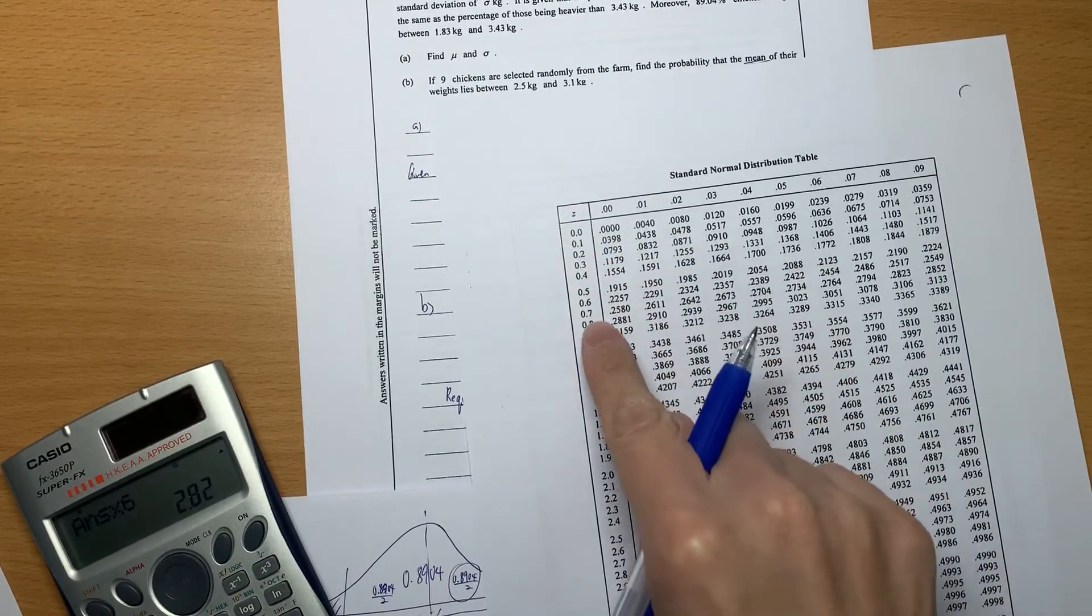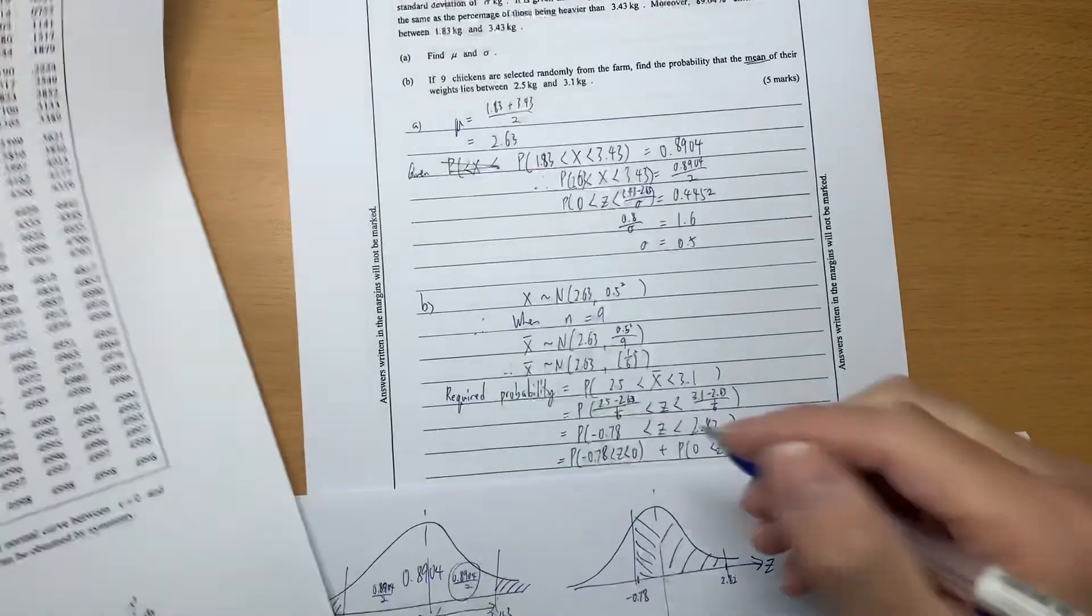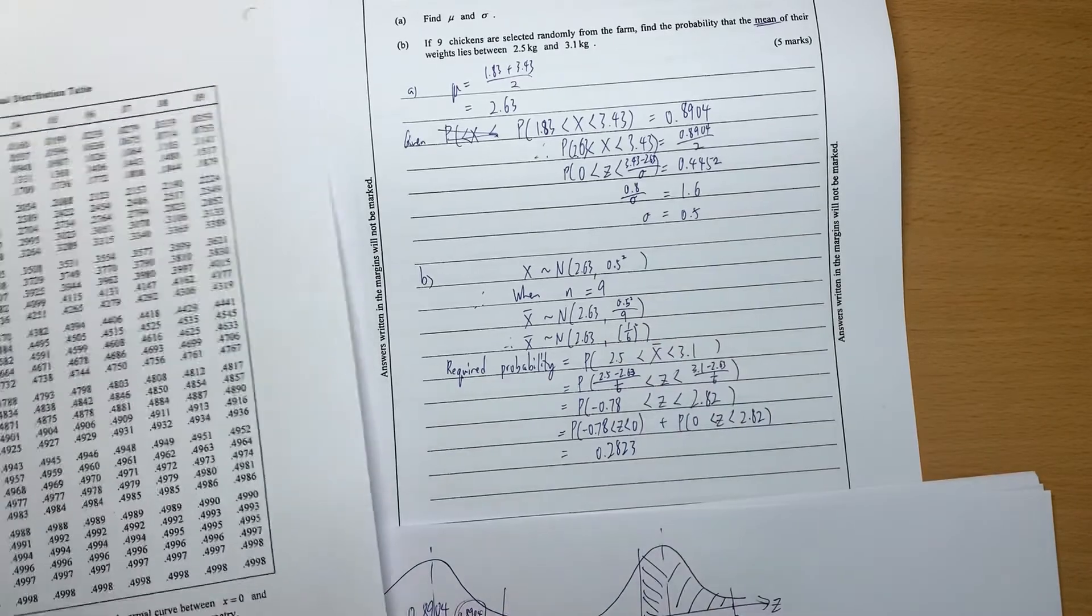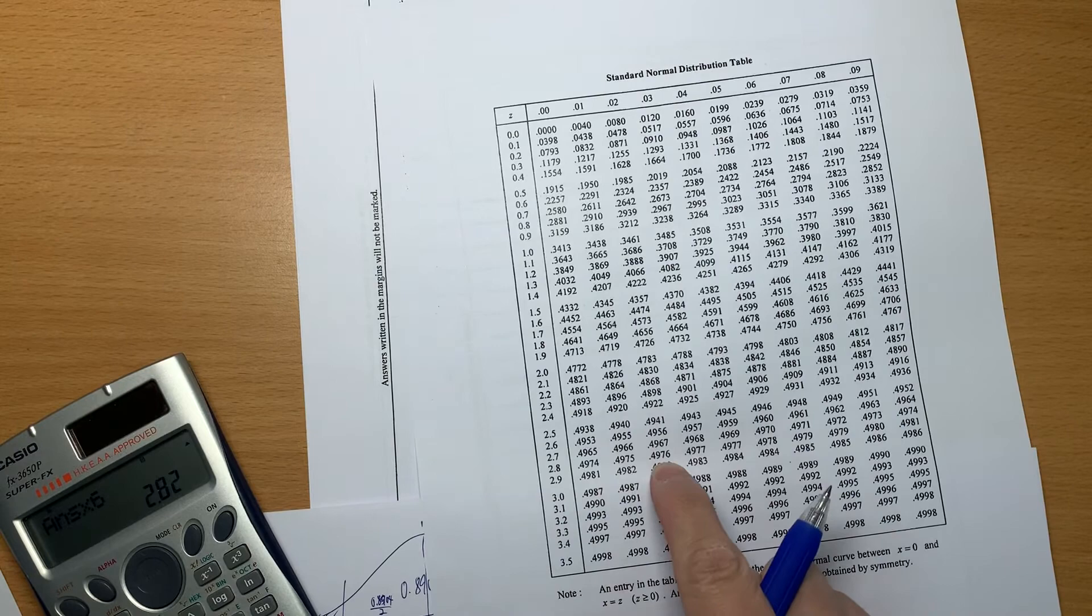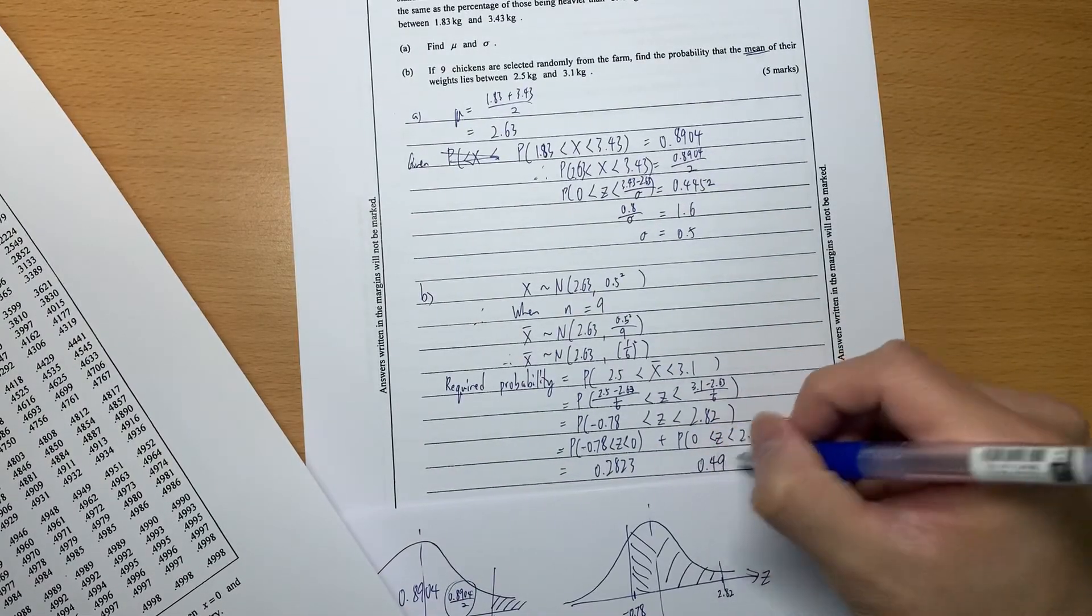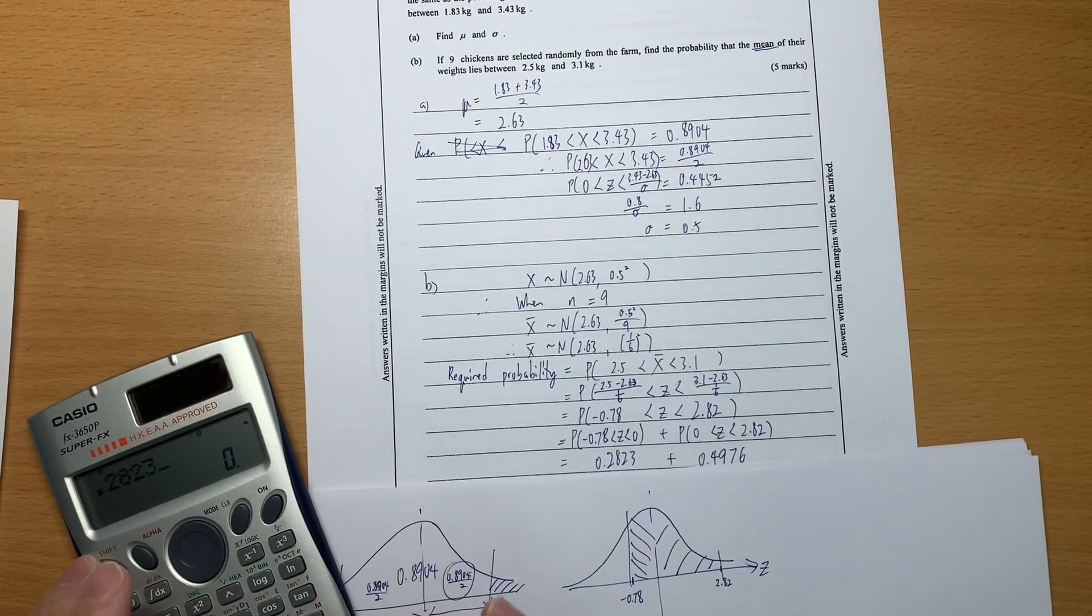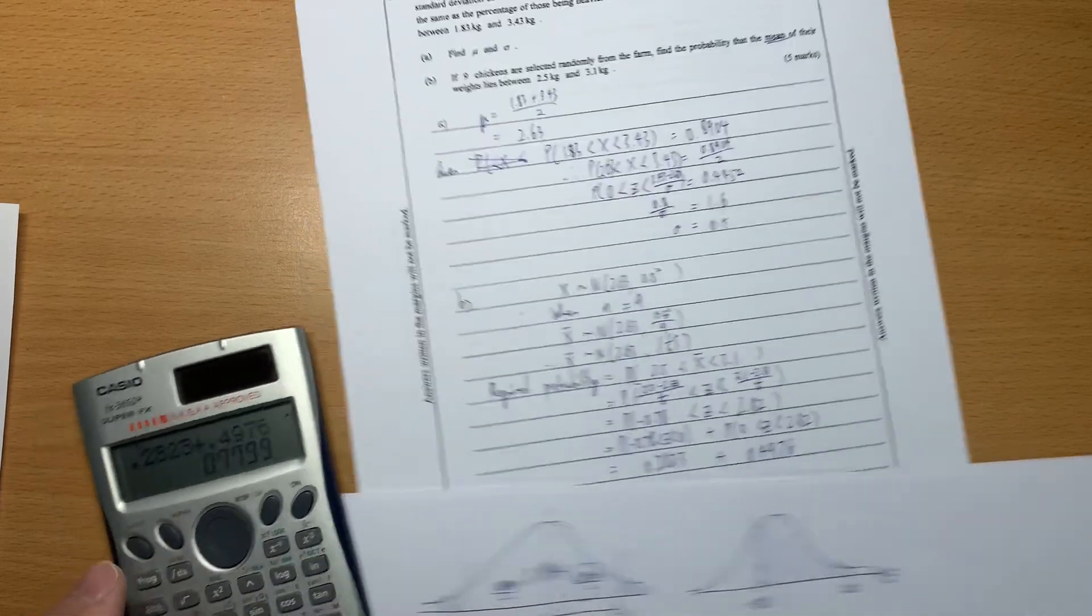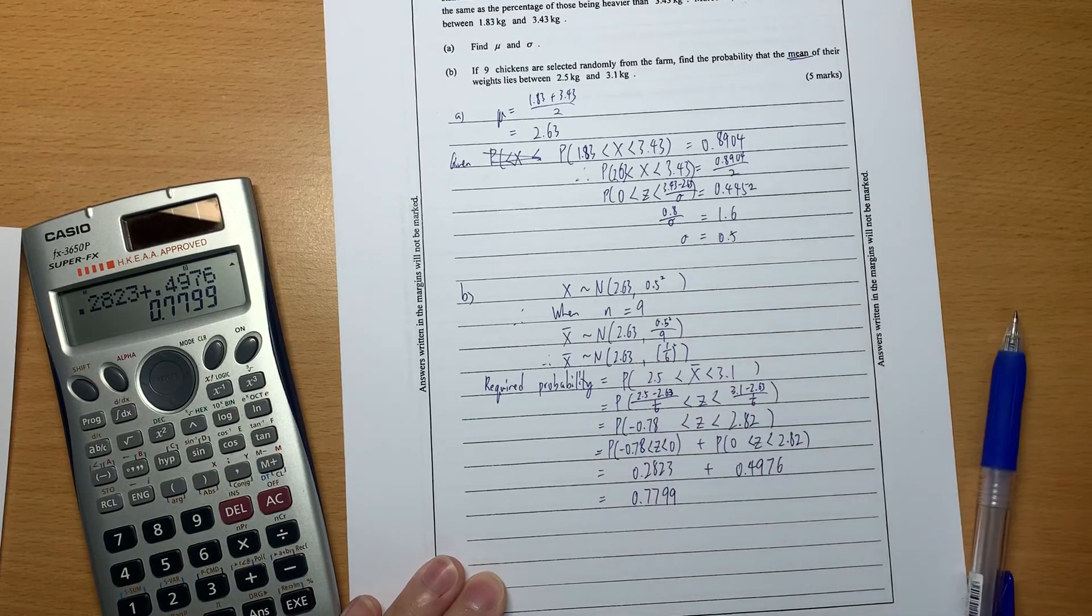0.78 gives 0.2823. 2.82 gives 0.4976. We just add them together and we got the answer is 0.7799. It's finished.